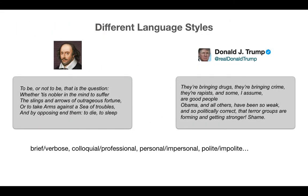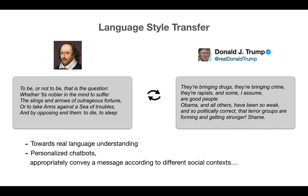Language is rich and powerful. We can express the same meaning in many different ways. It can be brief or verbose, colloquial or professional, polite or impolite, and people have their different personal styles. Can we train machines to perform this task? Given a sentence, rewrite it in another style, say Shakespeare style or Trump style. This is an important step towards real language understanding, and it has wide applications, such as to design personalized chatbots and to appropriately convey a message according to different social contexts.